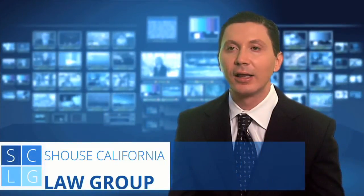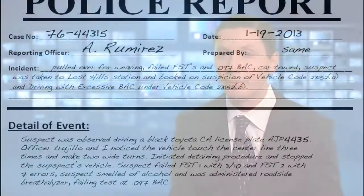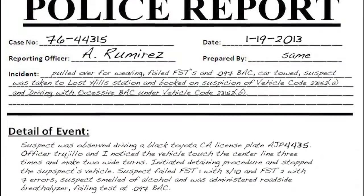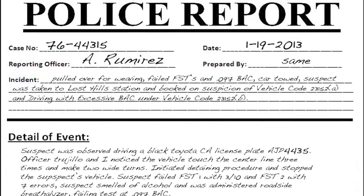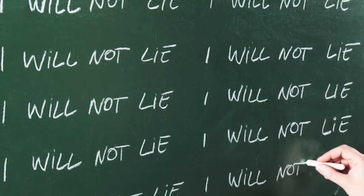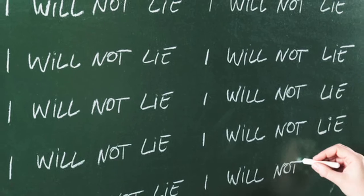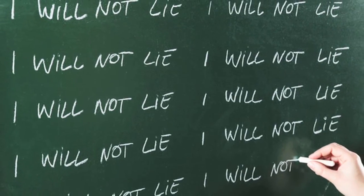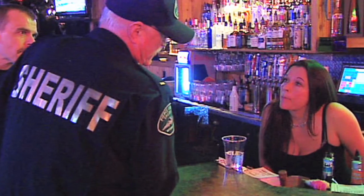Penal Code 148.5 is a California offense of making a false report of a crime. It's often called filing a false police report or making a false allegation of a crime. The information that you give to the police could be solicited or unsolicited.